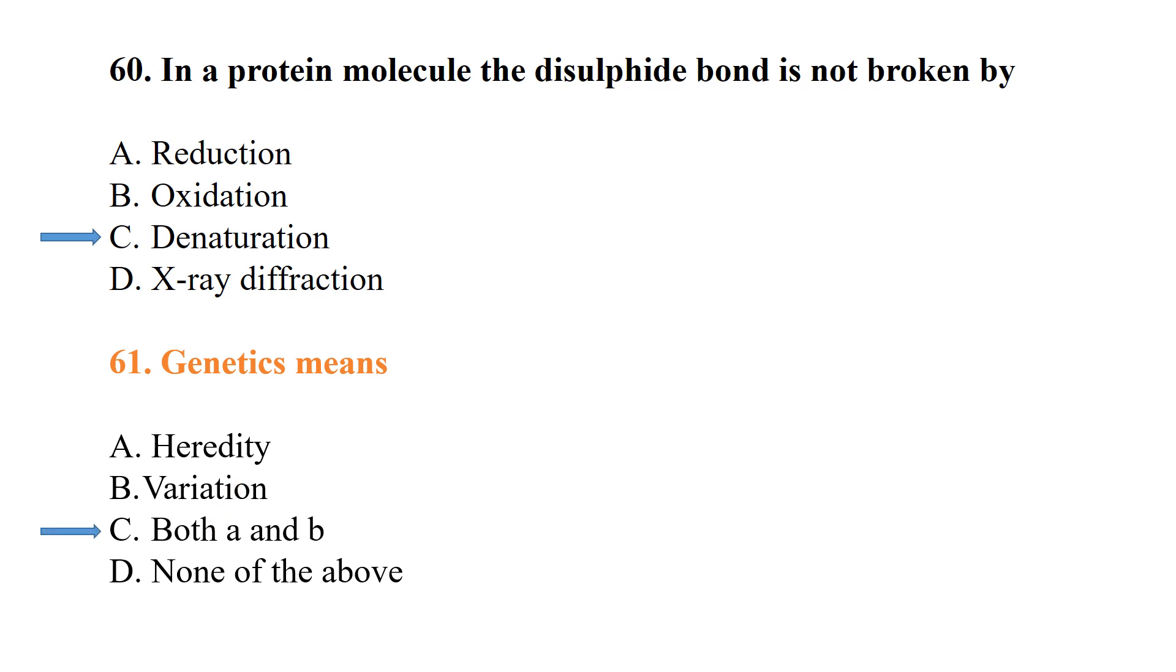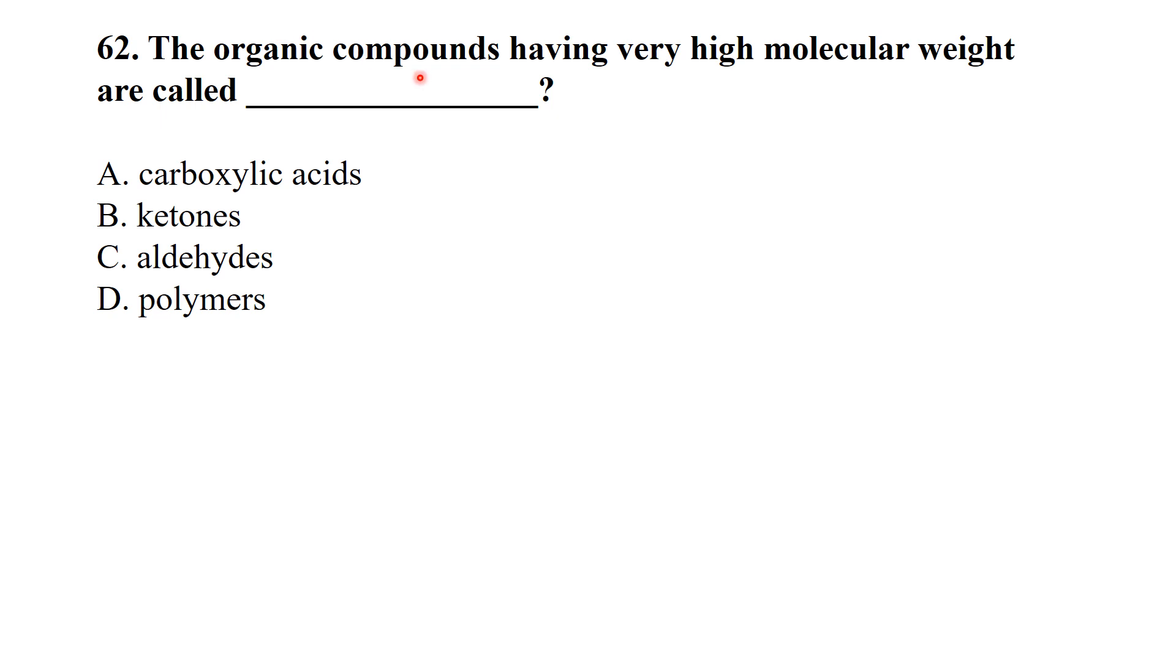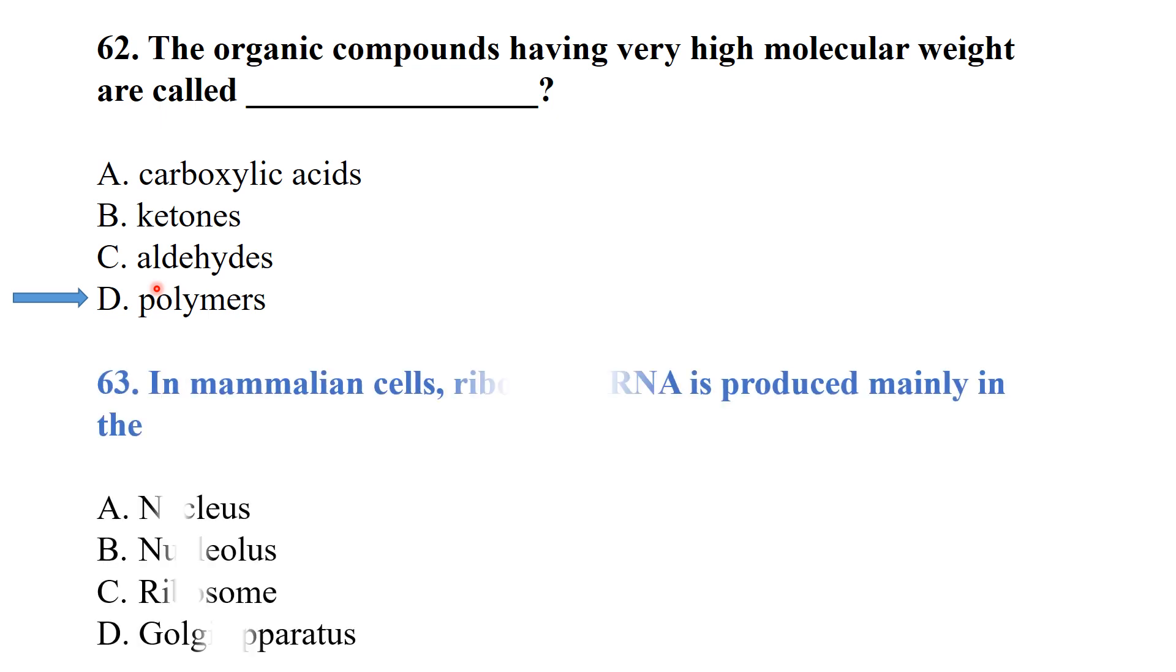Organic compounds having very high molecular weight are called polymers. Monomers combine to form polymers with very high molecular weight in the millions. Ribosomal RNA is produced mainly in the nucleolus.